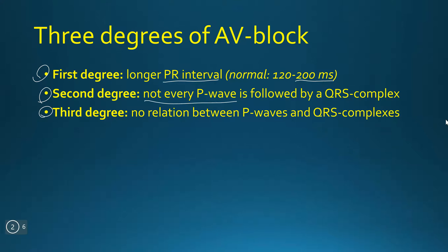In second degree AV block, not every P wave is followed by a QRS complex, even though the PR interval may be normal. In third degree AV block, there is no relation between P waves and QRS complexes.